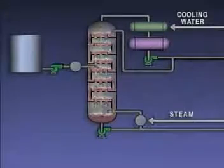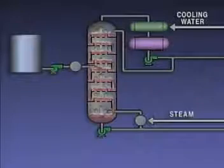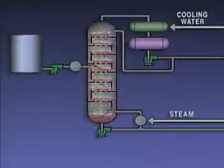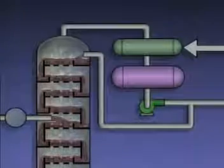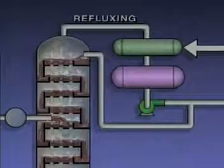If a distillation tower worked perfectly, it would produce pure products. Unfortunately, that's not the case. The lighter products usually contain some heavier fractions, and the heavier products usually contain some lighter fractions — this is sometimes referred to as overlap. Distillation systems use several methods to help maximize the purity of the products. One of these methods is called refluxing.